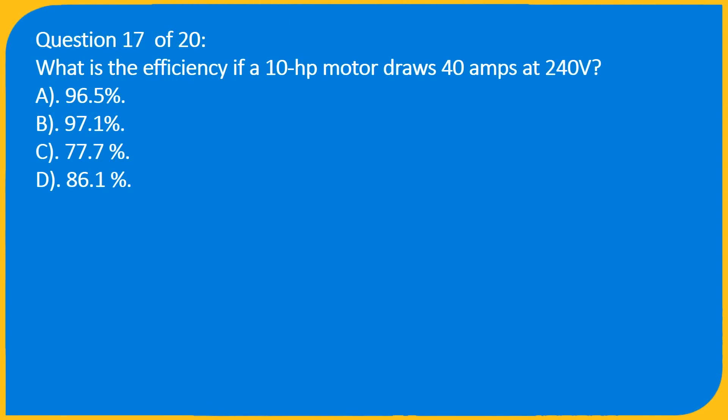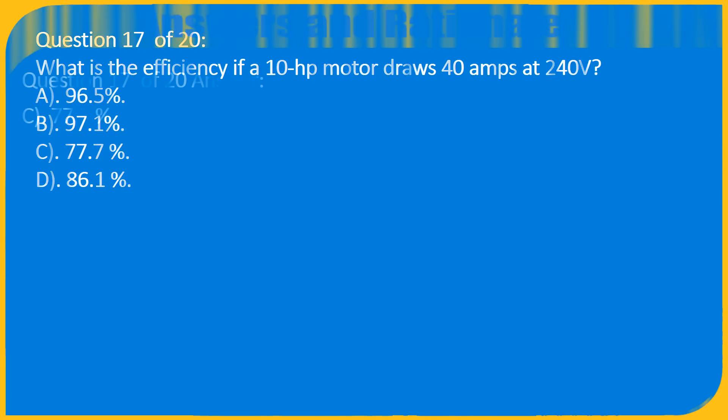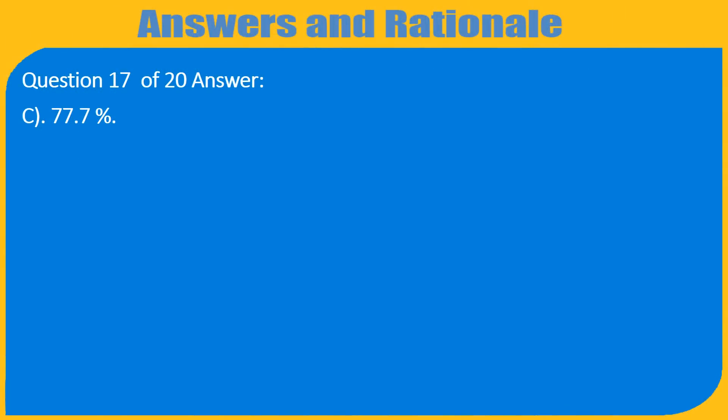Question 17 of 20: What is the efficiency if a 10-horsepower motor draws 40 amps at 240 volts? A. 96.5%, B. 97.1%, C. 77.7%, D. 86.1%. Answer: C. 77.7%.